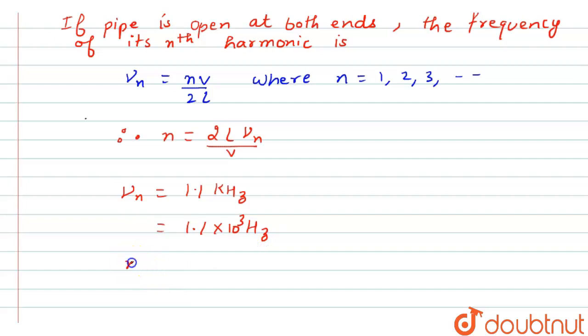So the value of n will be equals to 2 times L, that is 30 times 10 raised to power minus 2, times nu n, that is 1.1 times 10 raised to power 3, divided by v which is 330. We will calculate here. You can see this 30 will be cancelled with this 330, and 1.1, or you can see here 11 times 3 is 33, so we can cancel this term.